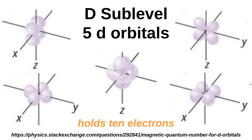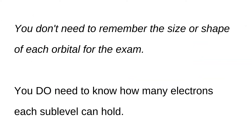From the third shell and up there is also a D sublevel. The D sublevel contains five orbitals, so it can hold a total of 10 electrons. Four of the D orbitals have the same shape but one is slightly different. The good news is that you don't need to know the shapes of orbitals for your exam, but it can help you understand what orbitals are when you can visualize them.